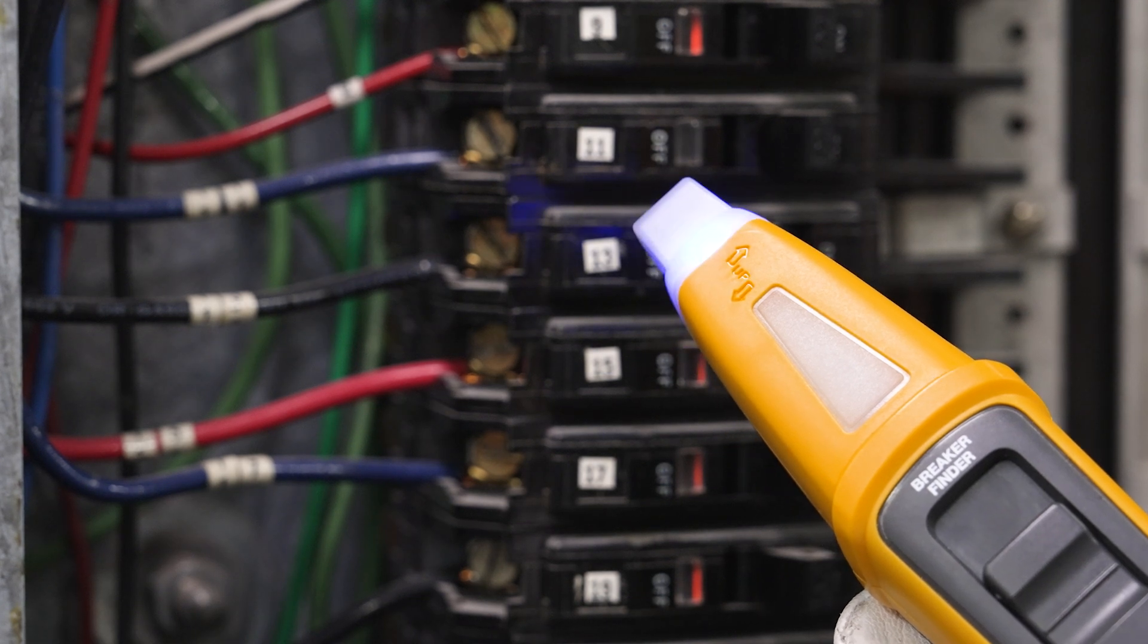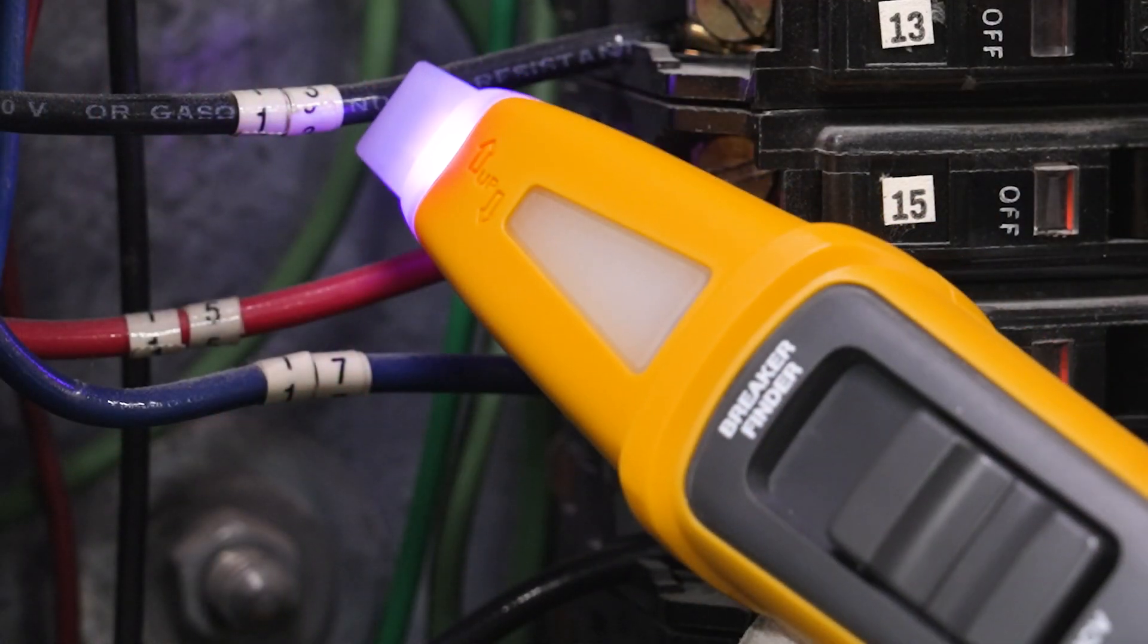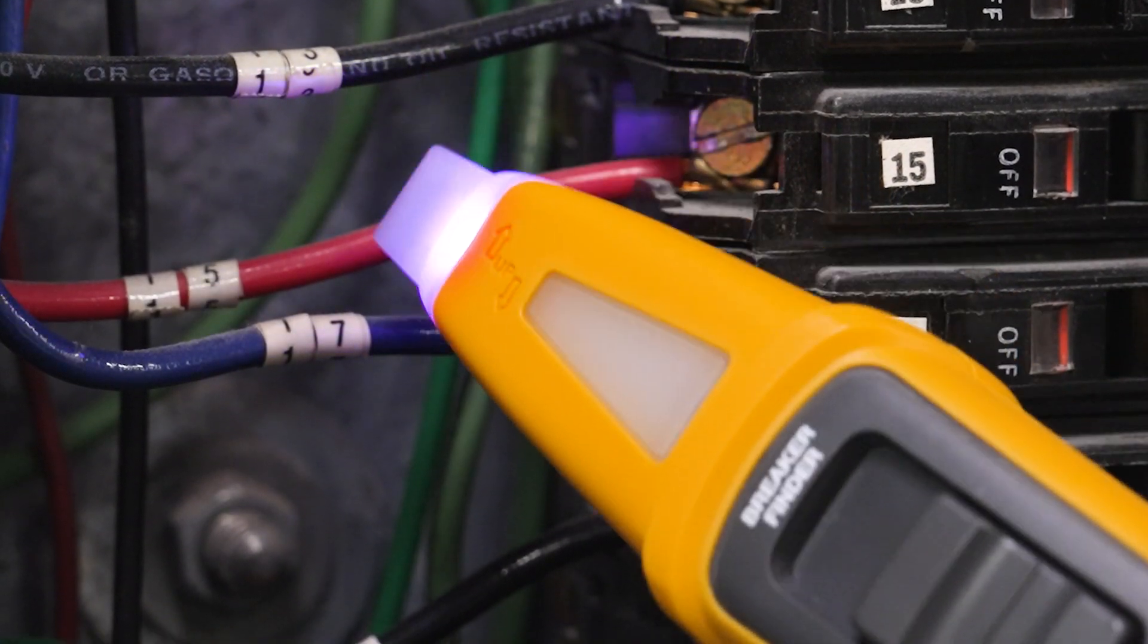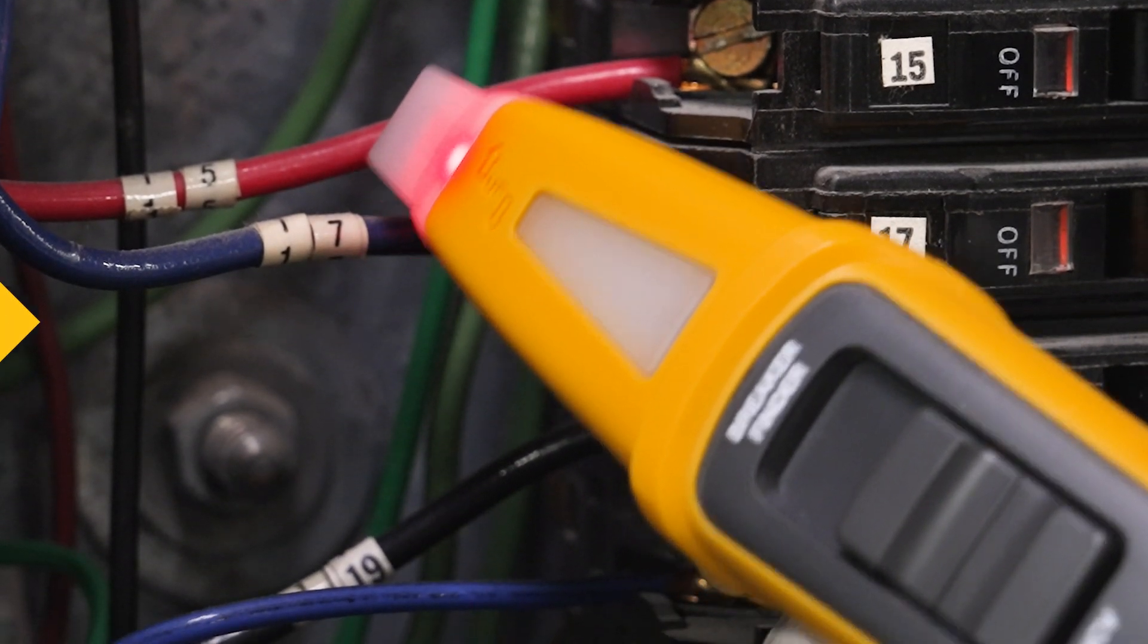The tip will glow blue when there's no voltage detected, purple when the voltage is near, and red with an audible beep when you've found the AC source.